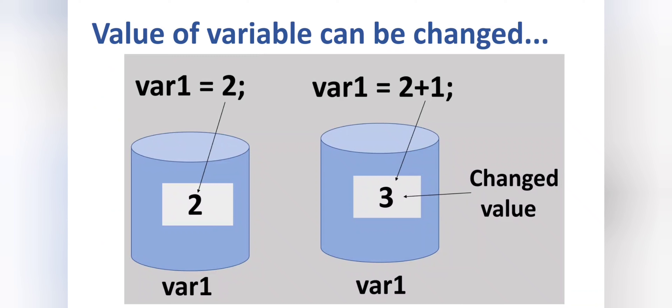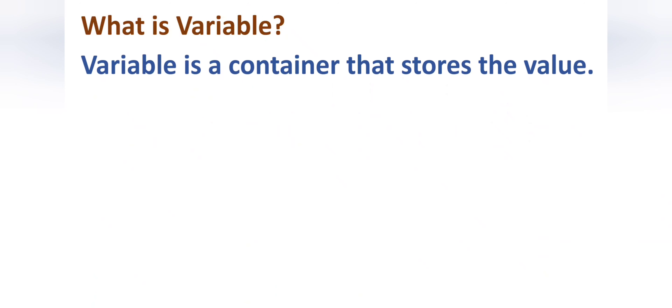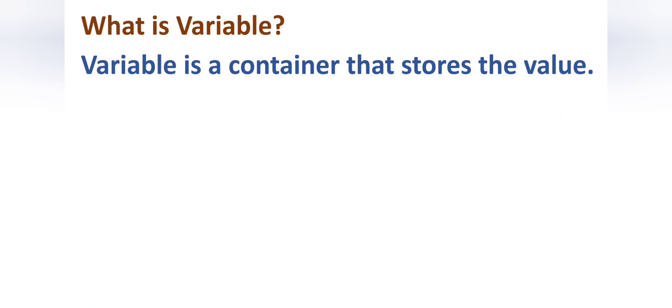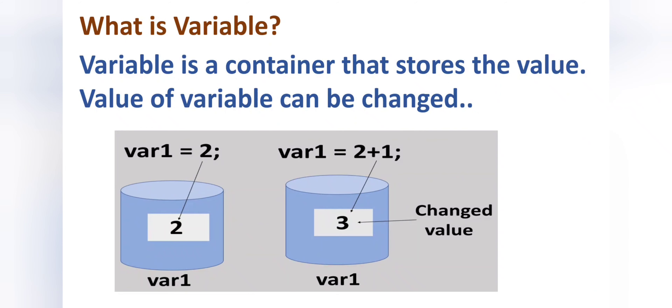Similarly in Java, we can change the value of a variable, and this is also called variable reassignment — that is, we can reassign a variable. So basically, a variable is a container that stores a value, and the value of a variable can be changed. In the next tutorial I will explain how to declare and initialize a variable with the help of an example. Keep learning, and thank you so much for watching.